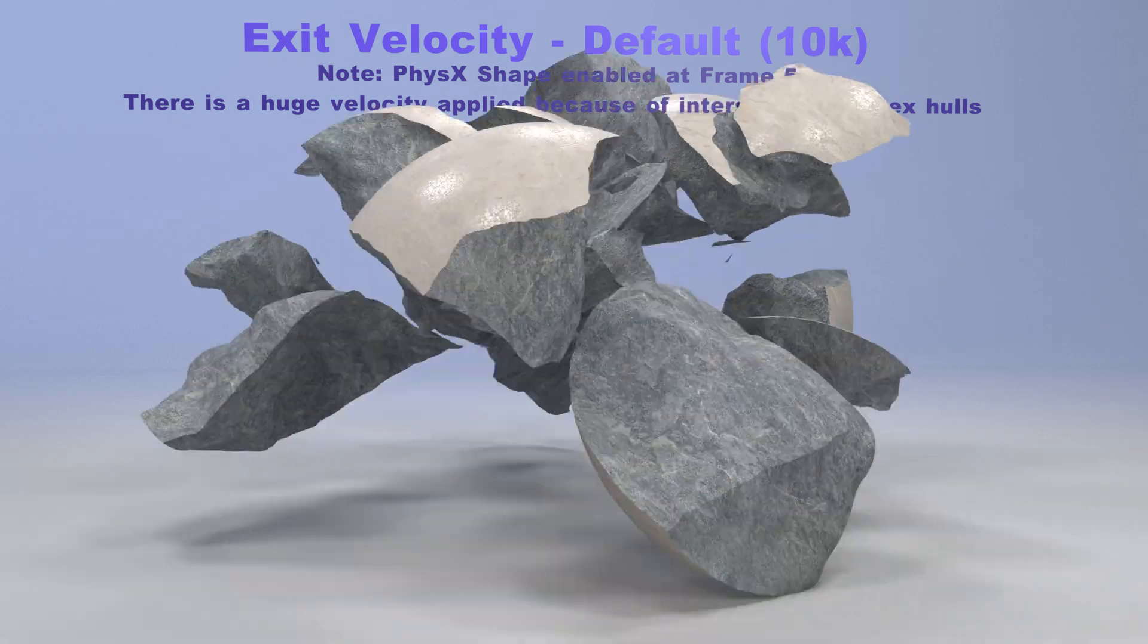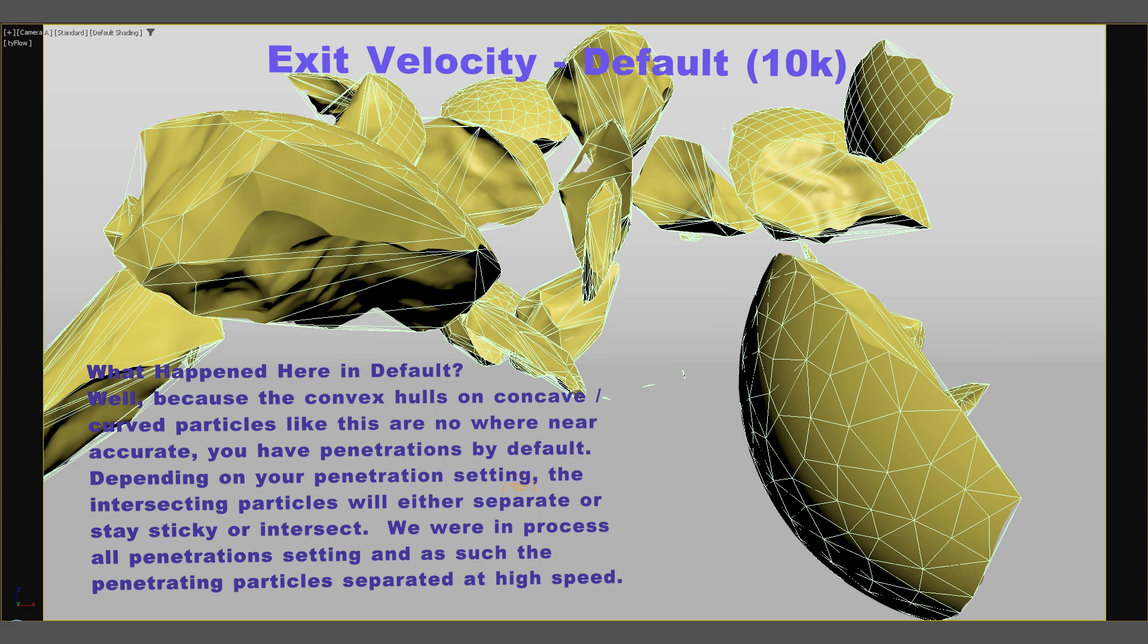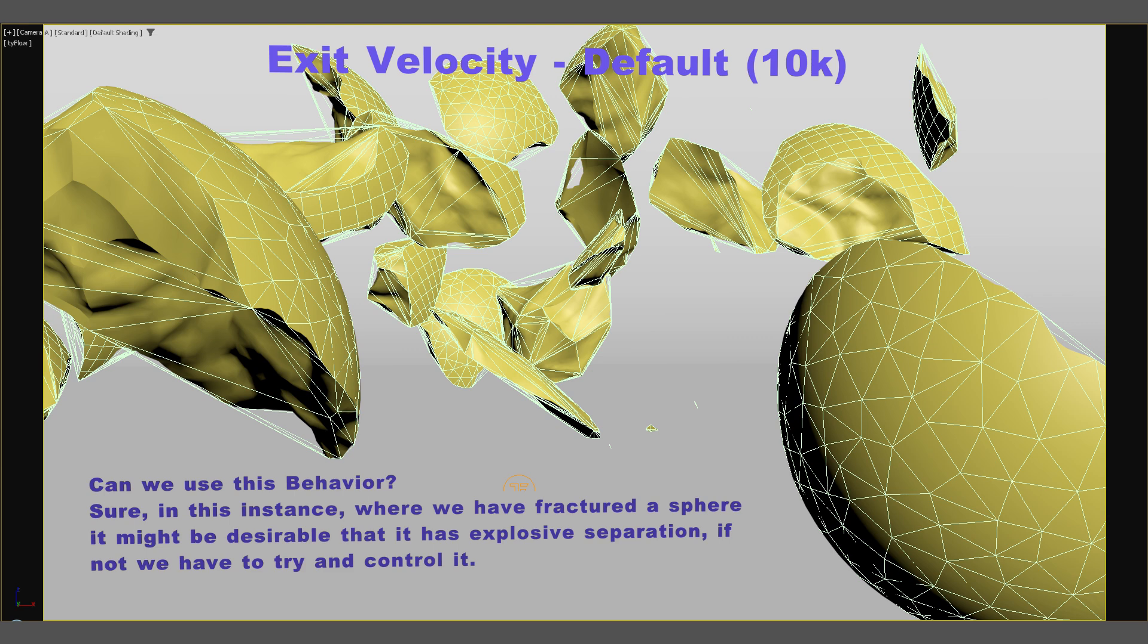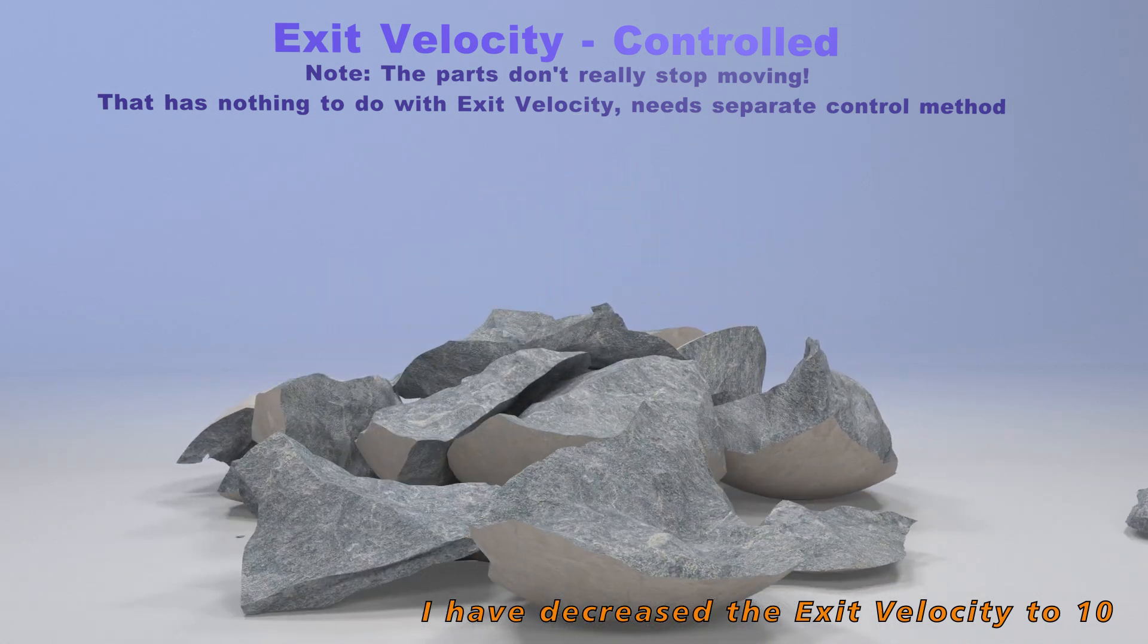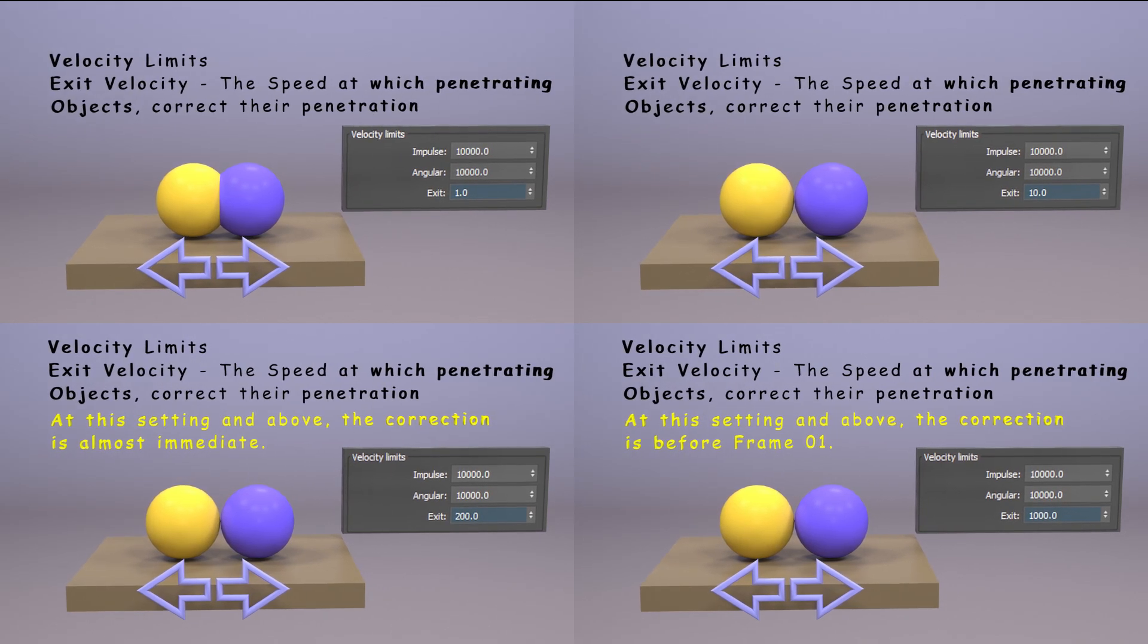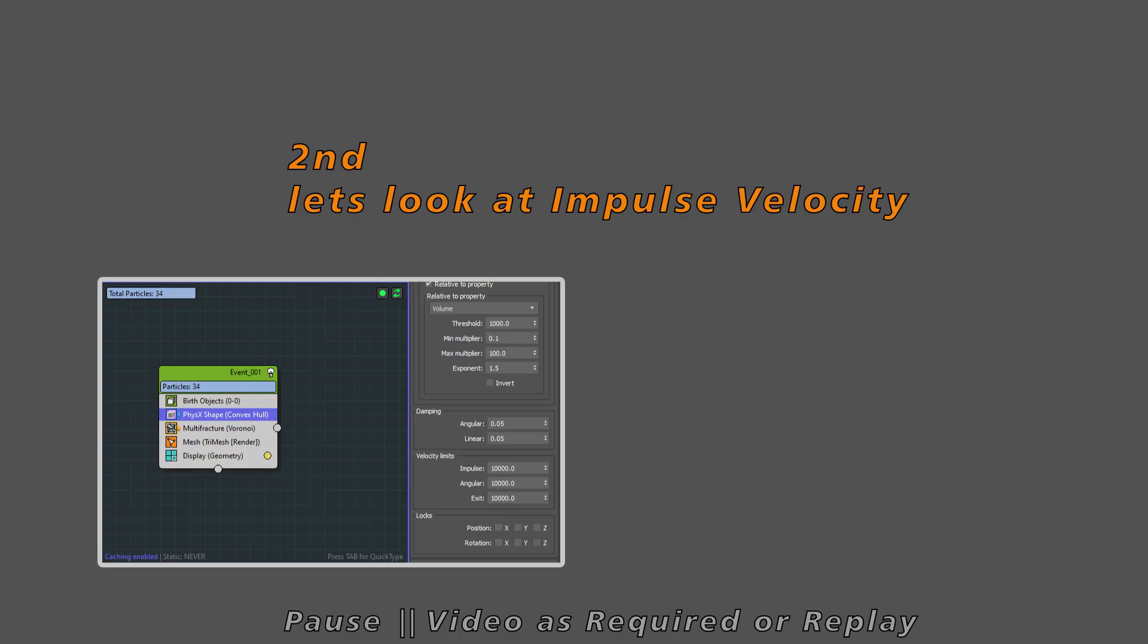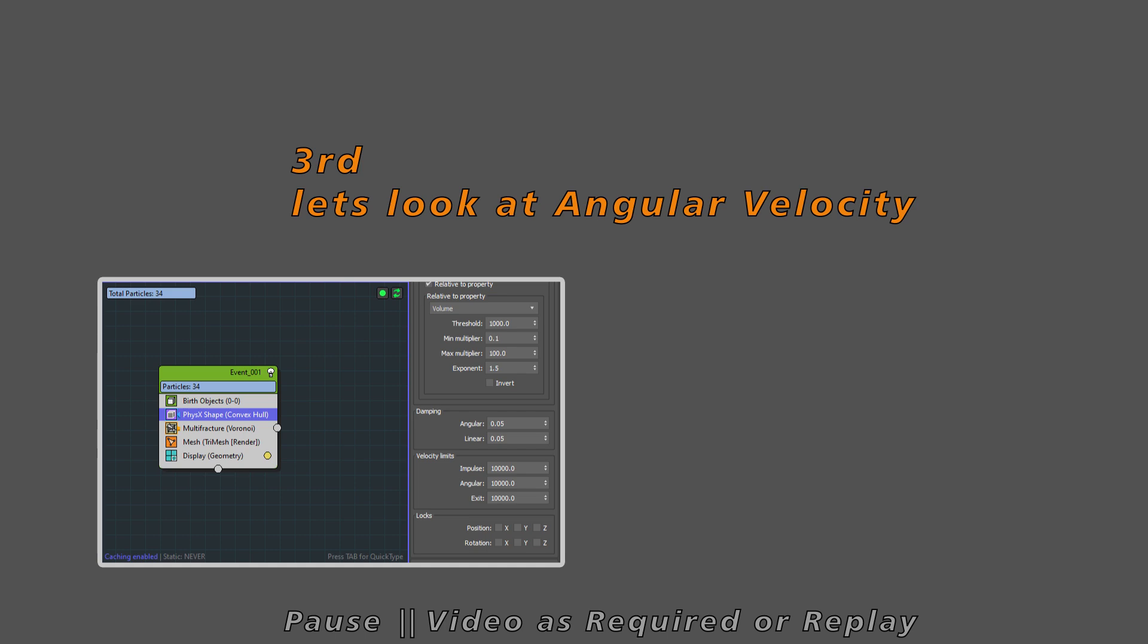So exit velocity. That means when we have penetrating objects they're going to try and de-penetrate themselves because convex holes aren't perfectly shaped to the objects themselves. Sometimes we can use this behavior to create explosive effects but other times we really want to control it. So don't be scared of the exit velocity setting. And impulse is like when two objects collide how do they interact with each other and you can adjust that velocity. And angular versus linear we kind of talked about earlier.